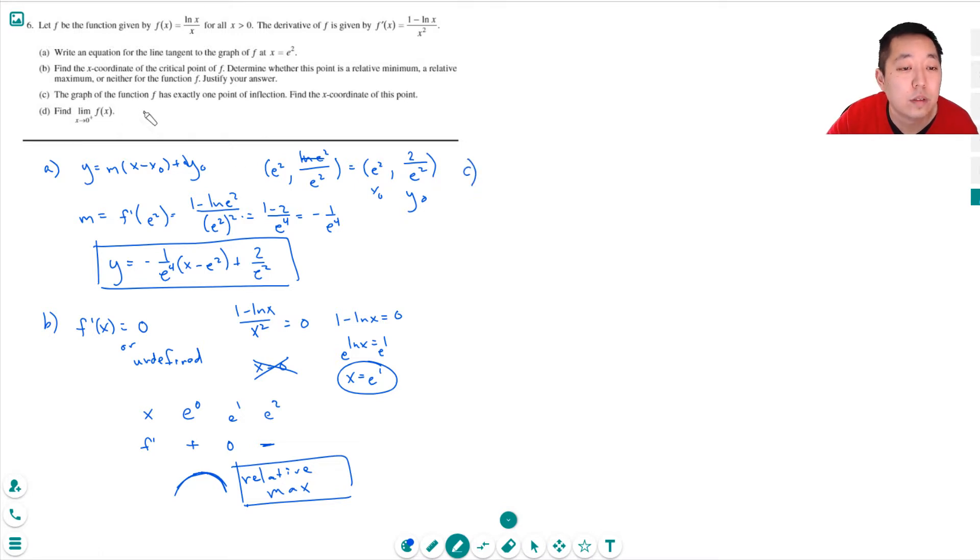Part c. The graph of the function has exactly one point of inflection. Find the x-coordinate of this point. Points of inflection, I need to know when the second derivative is equal to 0. The second derivative I can do by a quotient rule. So it's x squared times the derivative of this is negative 1 over x minus 1 minus ln x times the derivative of the bottom, 2x, over x to the 4th.